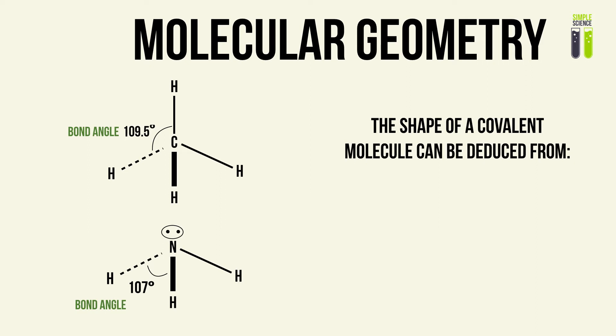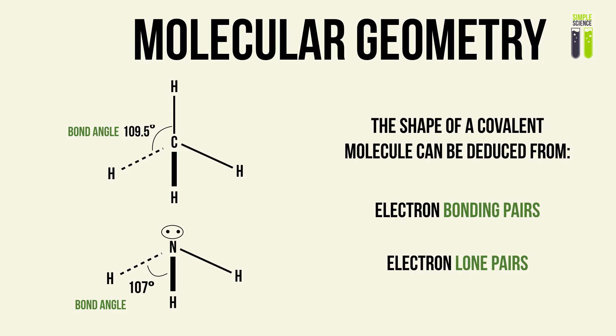The first thing is the number of electron bonding pairs — pairs of electrons that are involved in covalent bonding between two different atoms. The other thing is the number of electron lone pairs, which, as you can see in the bottom left diagram, are pairs of electrons that are not involved in any covalent bonding at all.